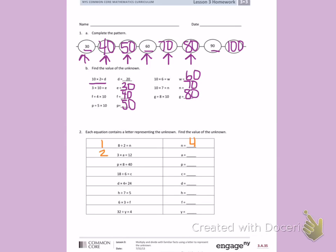Second, 3 times A equals 12. I'm missing a factor, so I'm going to count by 3's until I get to 12. 3, 6, 9, 12. A equals 4.